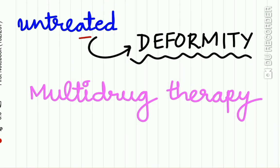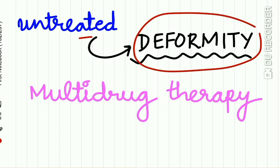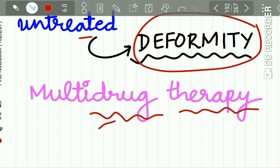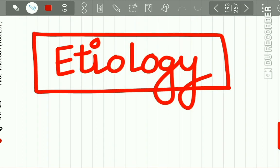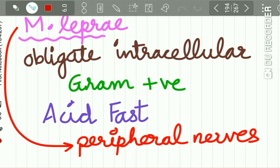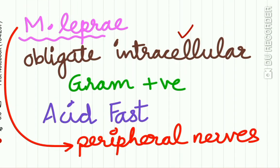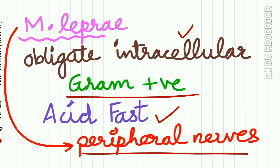If untreated, leprosy can cause permanent deformity in the patient, and recently multi-drug therapy has proved to be quite effective against leprosy. Mycobacterium leprae is an obligate intracellular organism, acid-fast bacilli, and it is gram-positive. It is acid-fast and it infects the peripheral nerves.